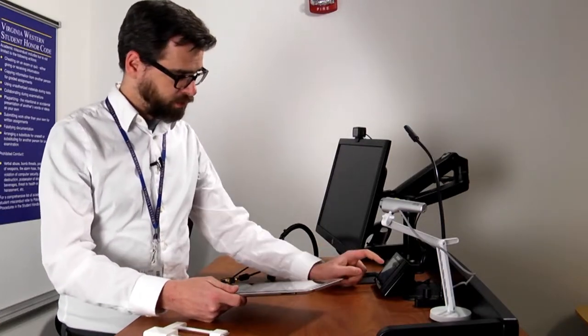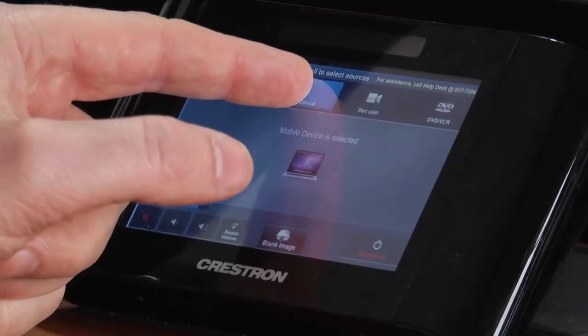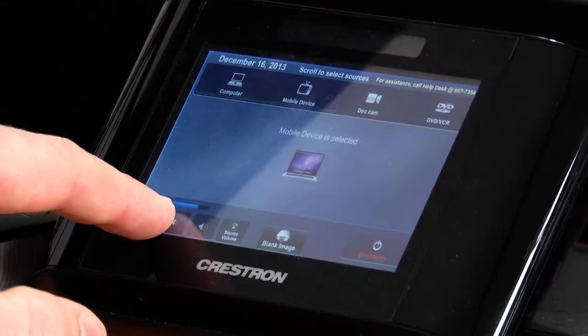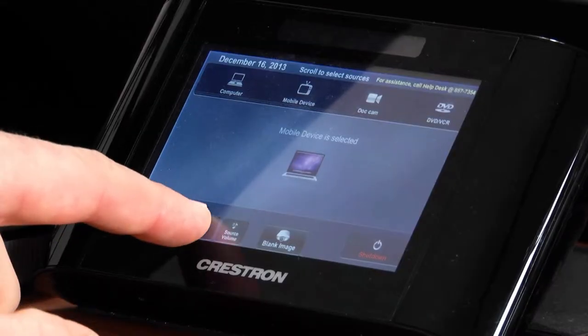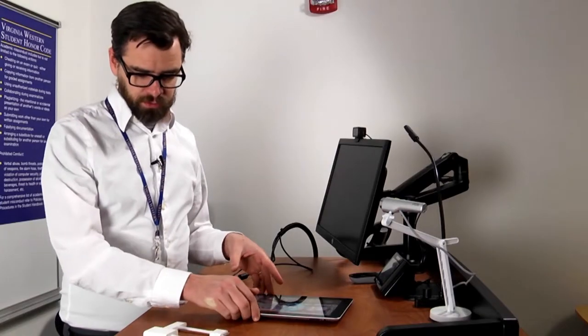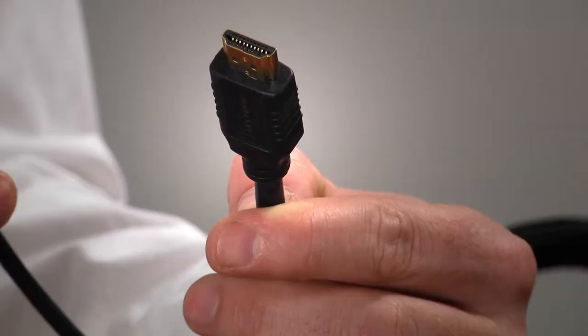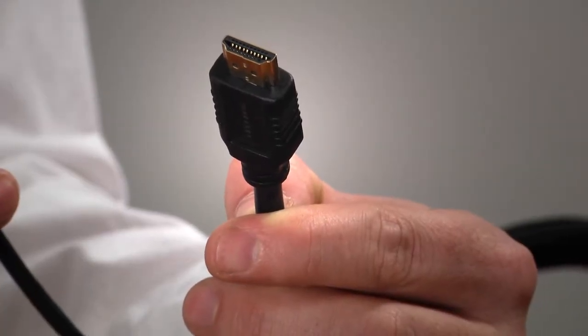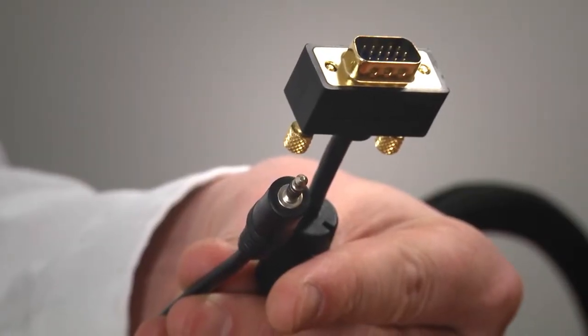To display your iPad on the big screen, select mobile device on the Crestron touch panel. Here you can control the volume with the up and down buttons. You'll either use an HDMI cable or VGA paired with an eighth inch audio plug to show the video.